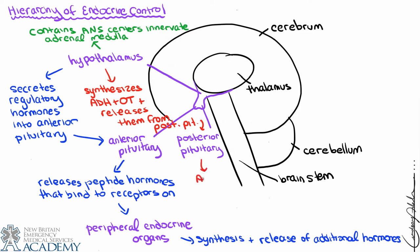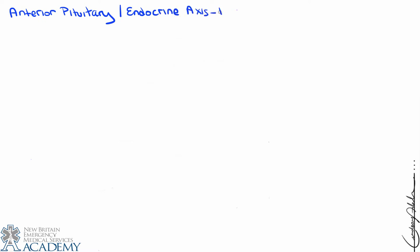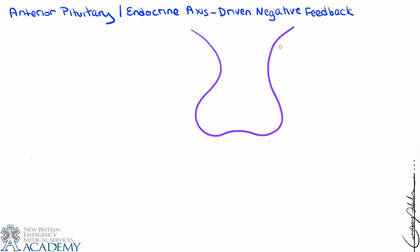The posterior pituitary will simply release the ADH and oxytocin synthesized by the hypothalamus, and those hormones will affect distant tissues. We'll now draw the specific pathways that allow for each type of communication to occur. We'll start with the anterior pituitary and describe endocrine axis-driven negative feedback — one of the two types of negative feedback that exerts control in the endocrine system. This axis involves the hypothalamus, the pituitary gland, and the peripheral endocrine organ targeted by the pituitary hormone.